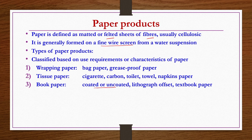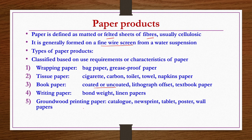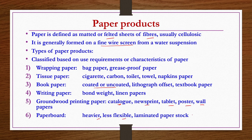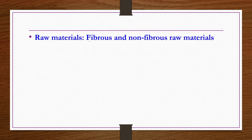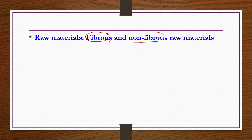Some papers are coated with polythene or glossy lining and are known as book paper. Writing paper includes bond weight and linen papers. Ground wood printing paper, made from mechanically processed pulp, is used for catalogs, newsprint, tablets, posters, and wallpapers. Paper board refers to heavier, less flexible, laminated paper stock. Raw materials for paper production include fibrous and non-fibrous types. Pulp is mostly cellulose and is fibrous. Non-fibrous materials such as fillers and sizing agents, including inorganics, are also required to provide strength, flexibility, and other properties.